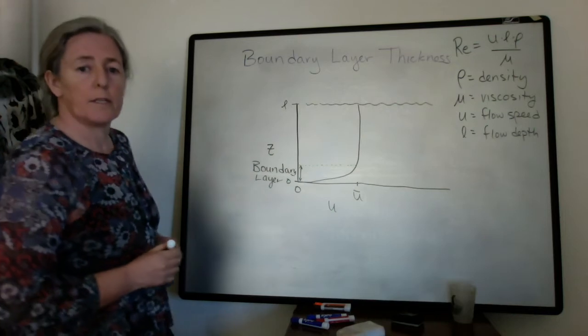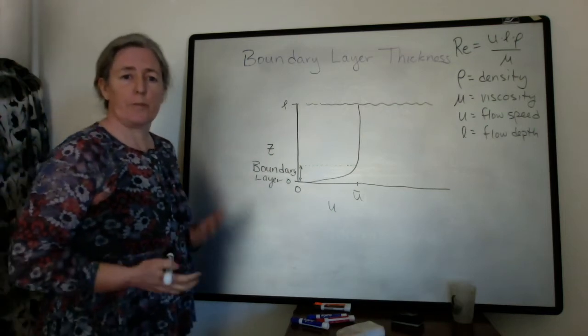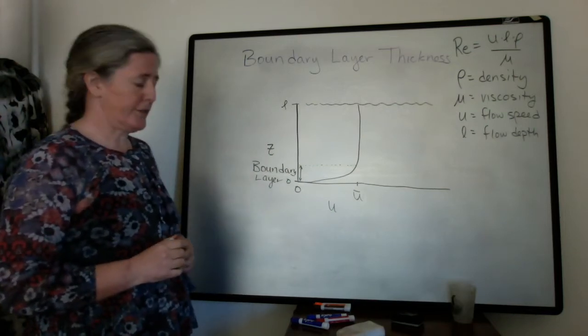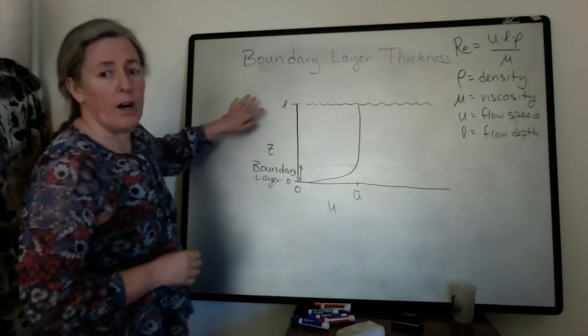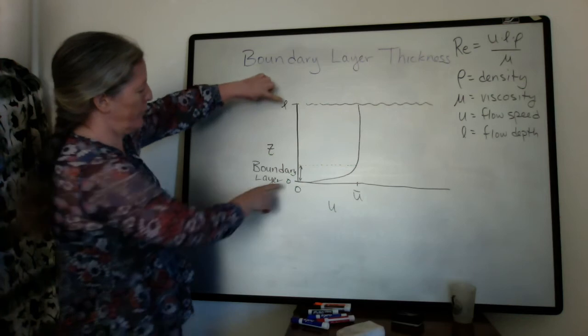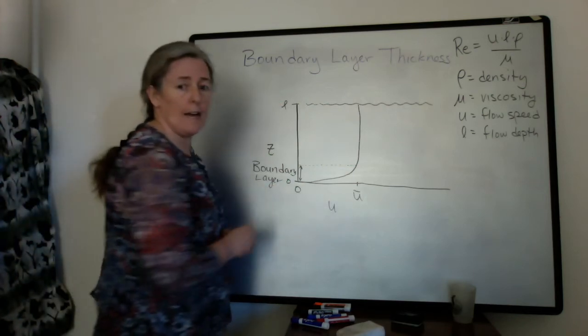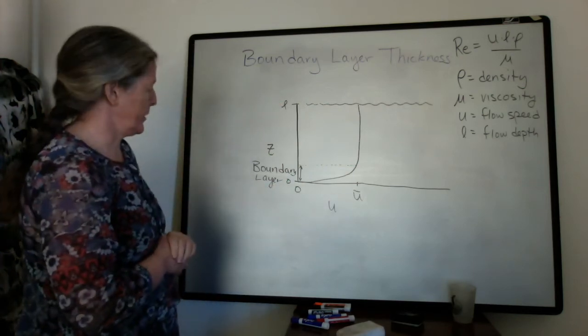Okay, I want to talk a little bit about the relationship between turbulence and boundary layer thickness. So I've recreated our drawing here where we have a flow depth with the average flow speed for this particular case.